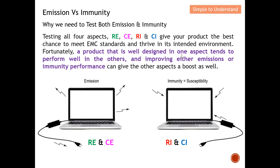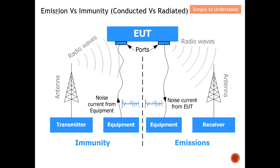Fortunately, a product that is well designed in one aspect tends to perform well in the others. Improving either emission or immunity performance can give the other a boost as well. For example, designing for good emission also provides robustness in terms of immunity. So improving emission indirectly improves immunity, and vice versa — they are complementary.